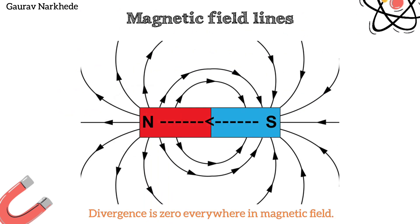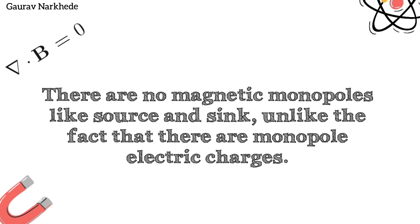This same thing is happening with magnetic fields. This equation means the divergence of magnetic field is always zero and there are no magnetic monopoles and source and sink.